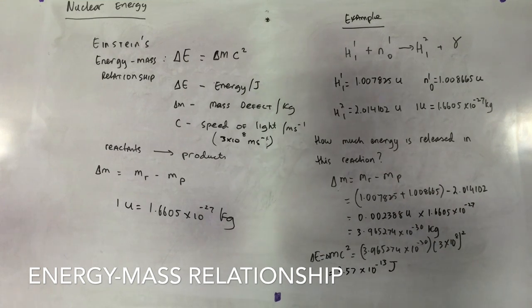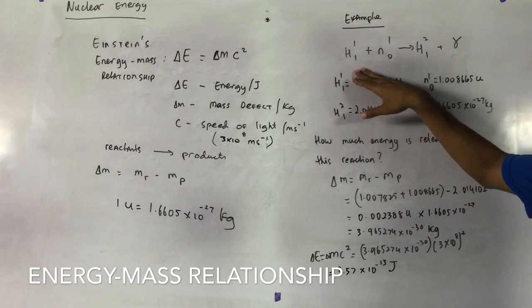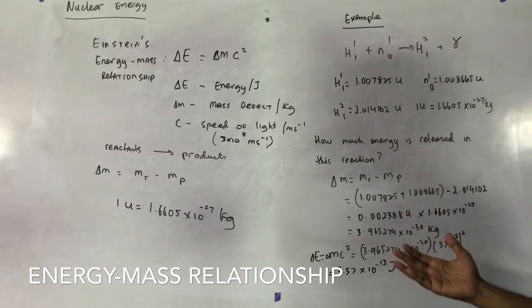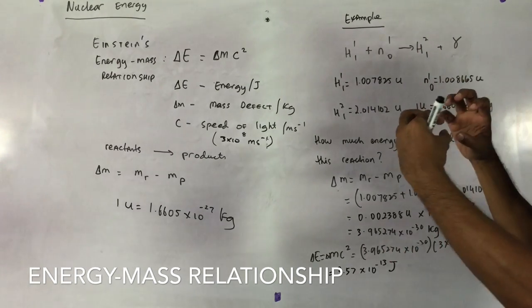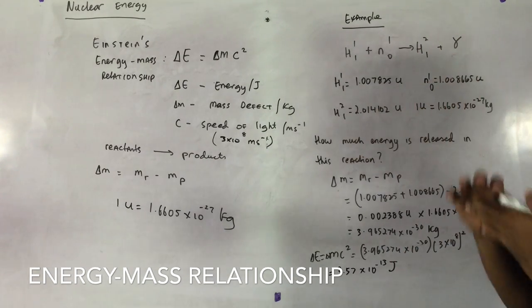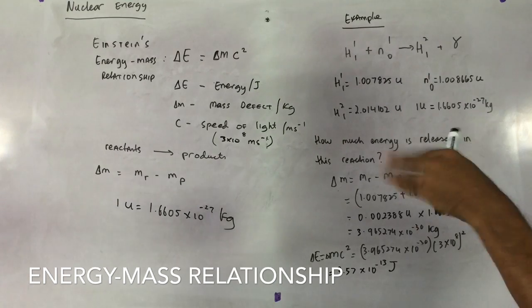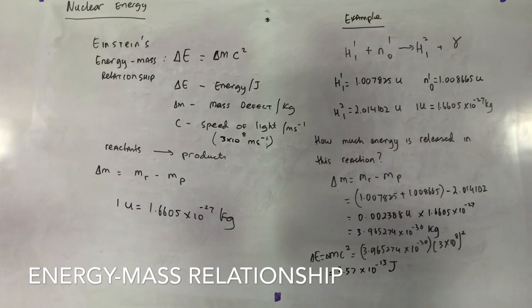There are two types of reactions that we look at. We look at nuclear fusion and nuclear fission. Fusion is where you have two small particles joining to form one, like in the sun, right? Like what reactions are going in the sun. Or fission, where you have one big particle splitting to form two small particles. So you have fusion and fission.